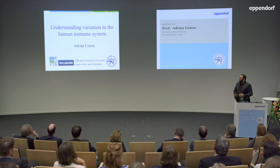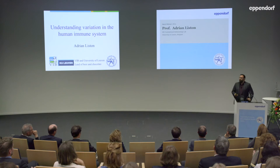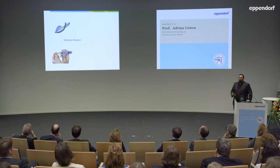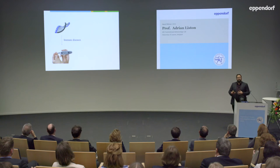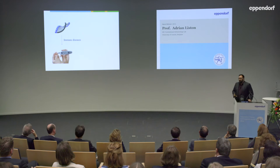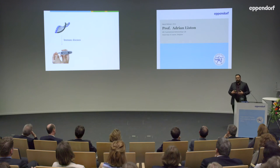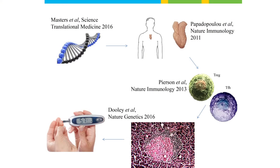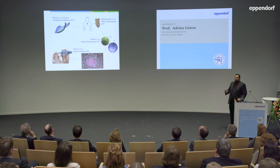I want to talk about one story today, but I'll give a bit of an overview about the overarching theme of the lab. It's very simple: what we'd like to know is why variation between people makes some people develop immune diseases — why some people are more prone to develop autoimmune or auto-inflammatory diseases. One way of looking at this is as a geneticist, and we do genetic studies to try to work out why some genes make individuals prone to developing autoimmunity.